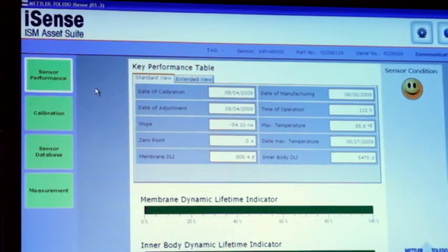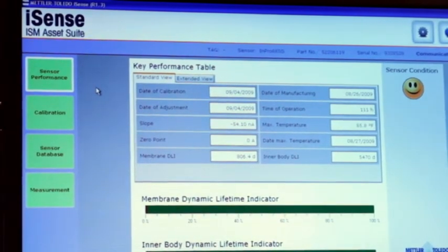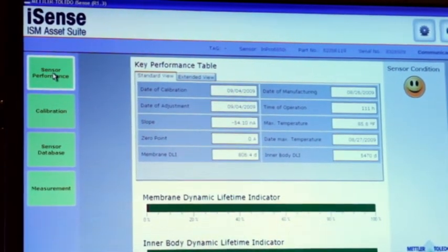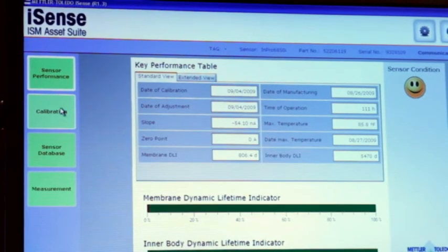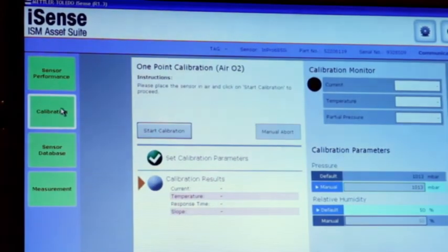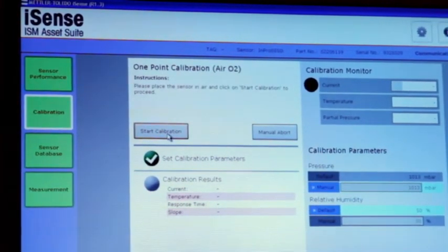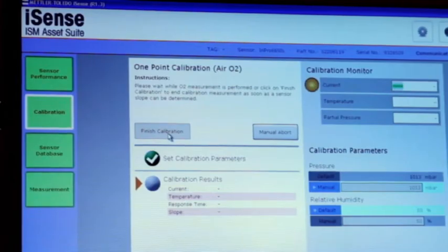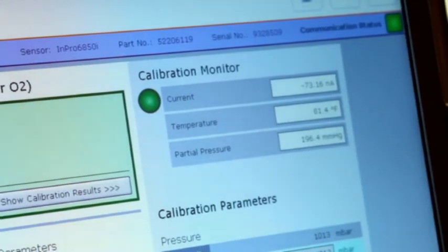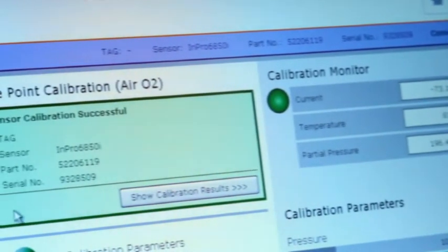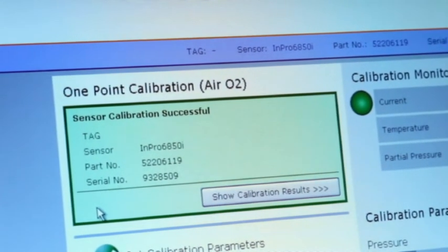After the sensor has been polarized, calibration is necessary. Using iSense, this can be performed easily in a lab environment. Because the amperometric sensors are highly linear from 0 to 100% oxygen, it is sufficient to perform a one-point calibration in air. The calibration itself is very fast and straightforward.